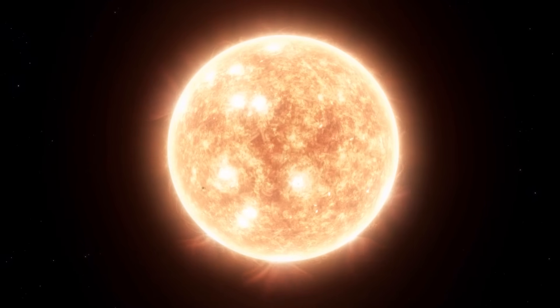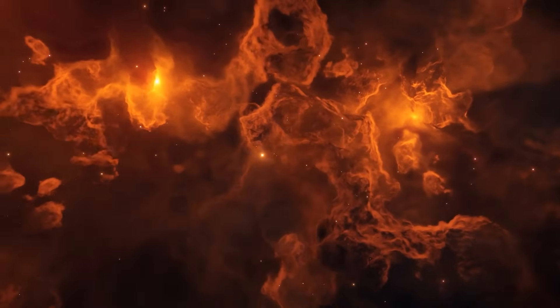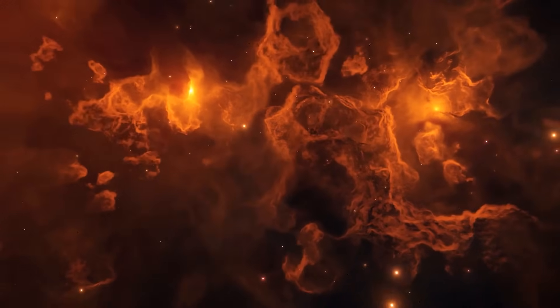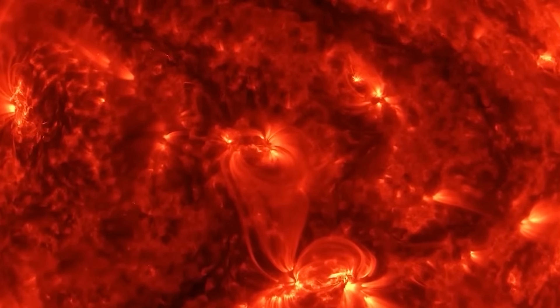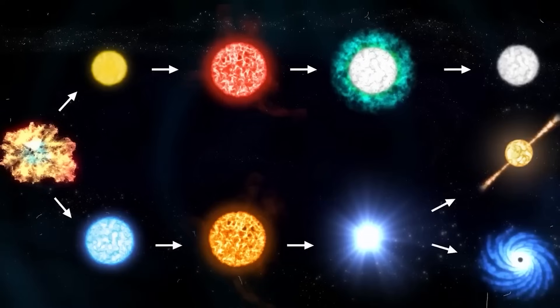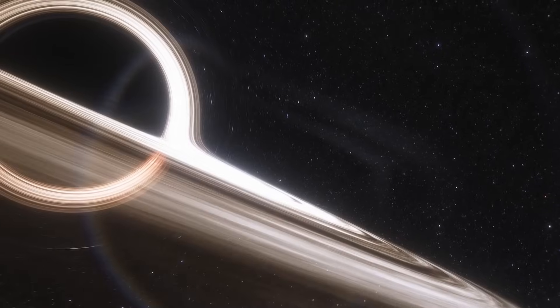As stars like Betelgeuse deplete their hydrogen fuel, they transition to the red supergiant phase, expanding in size and changing color. The future of Betelgeuse, like that of all red supergiants, leads to an explosive conclusion as a supernova. This event will represent the pinnacle of its life cycle, leaving behind either a neutron star or a black hole.